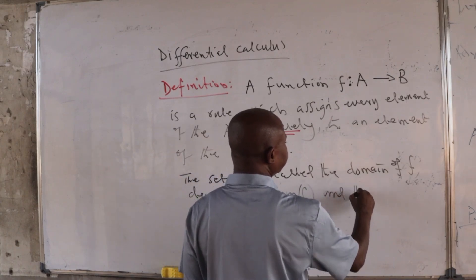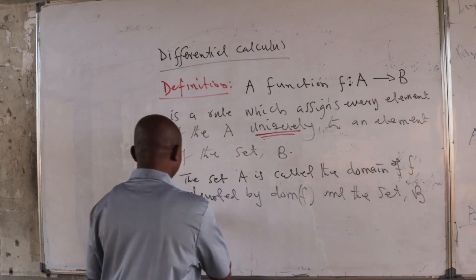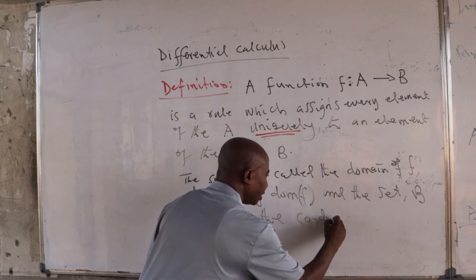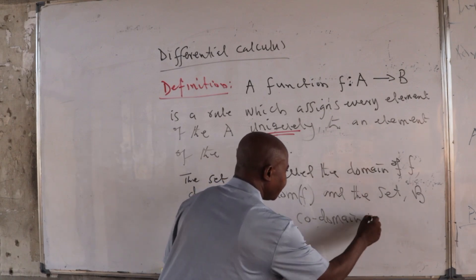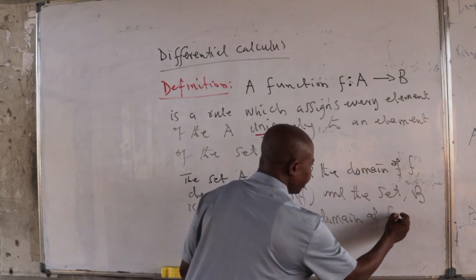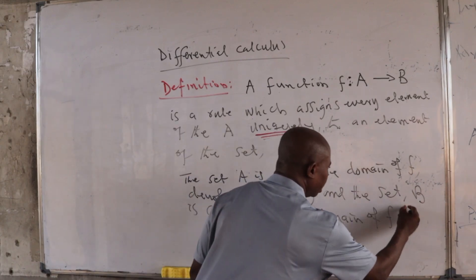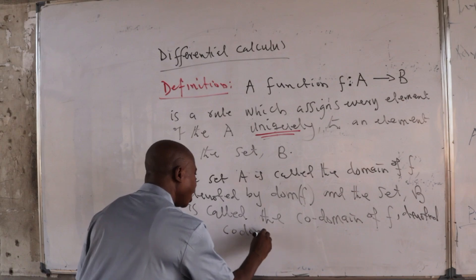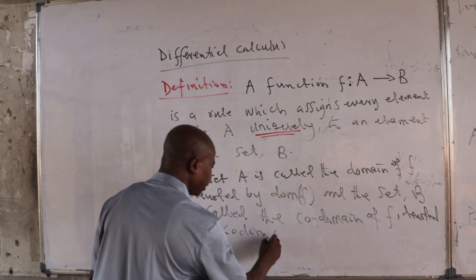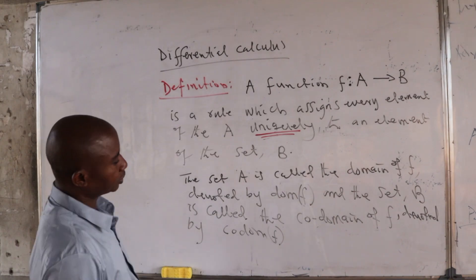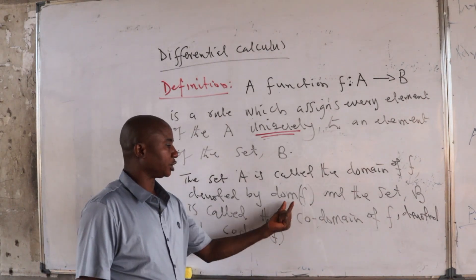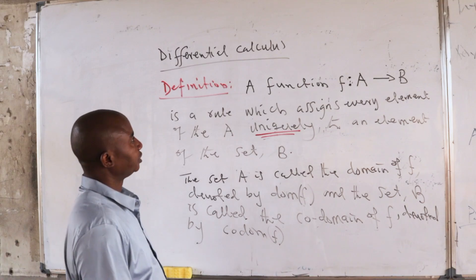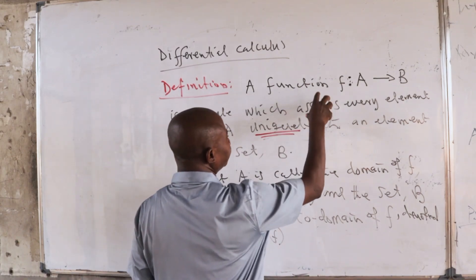And the set B is called the codomain of F. I can also denote this by CODOM F. This is just my own notation; other authors can use their different notations. But in our discussion, this is what we have for the domain of the function F and for the codomain of the function F.